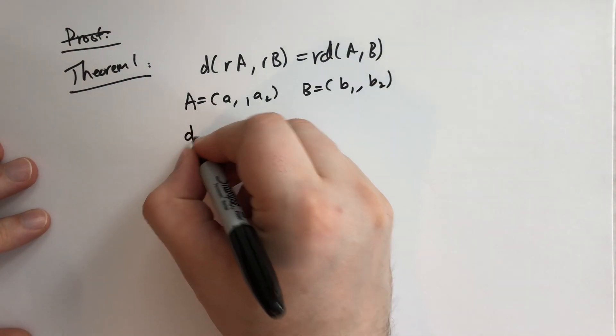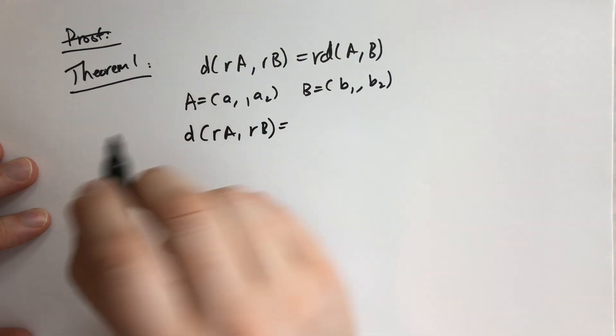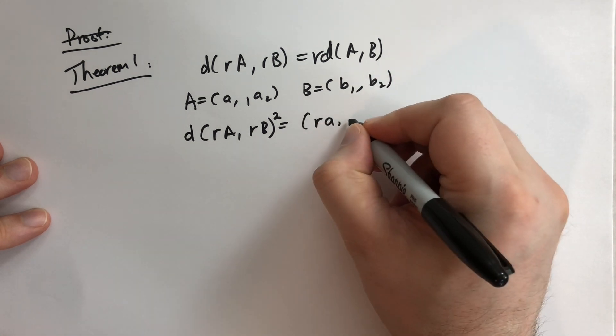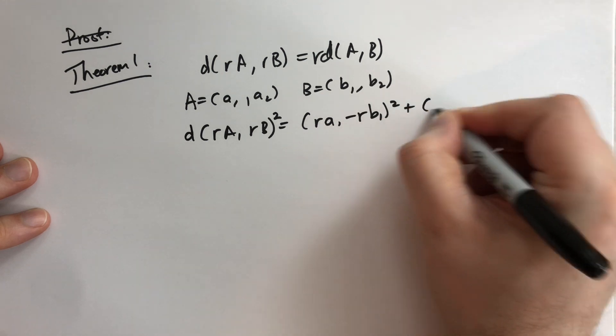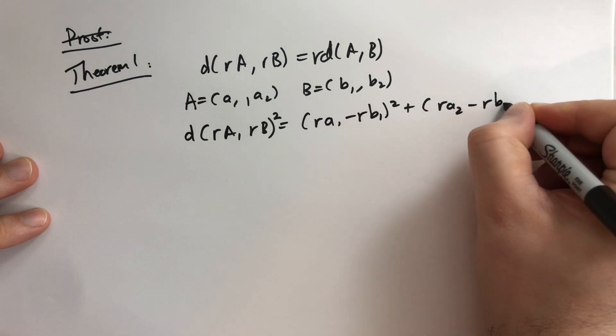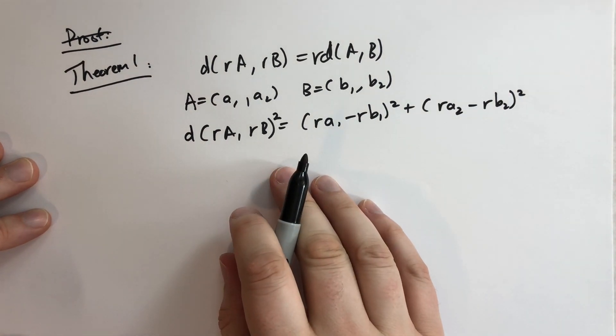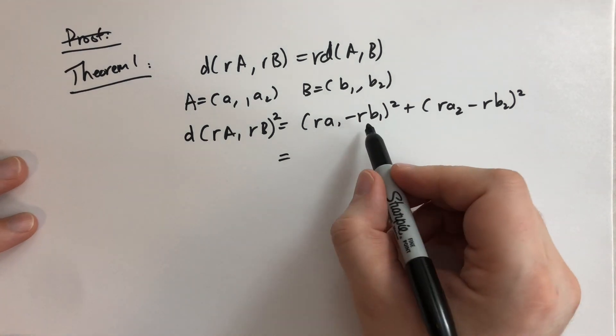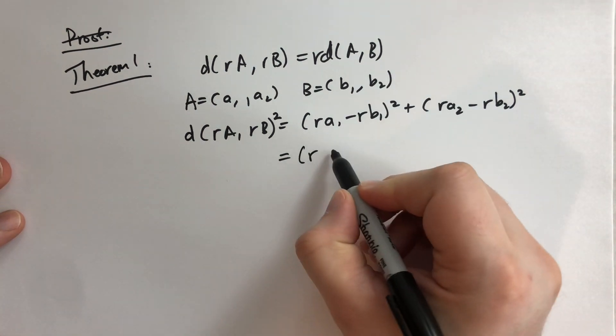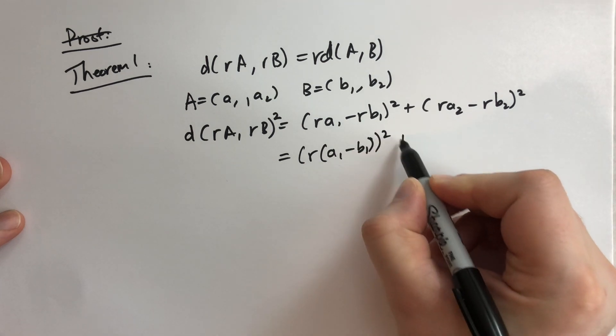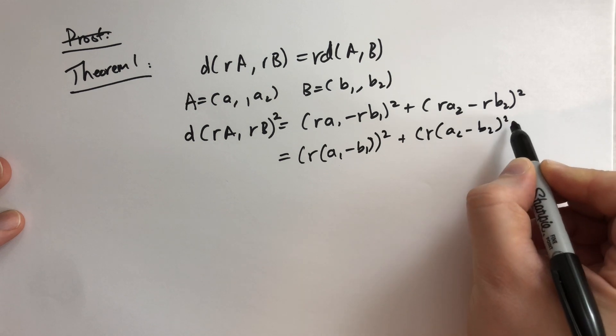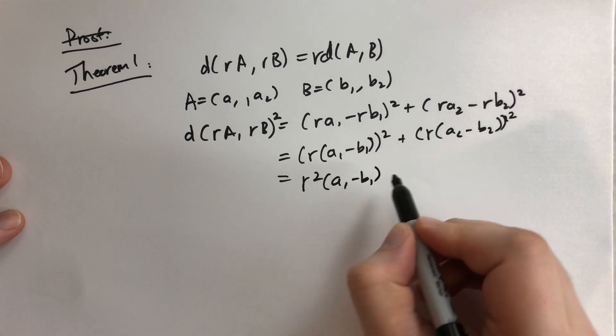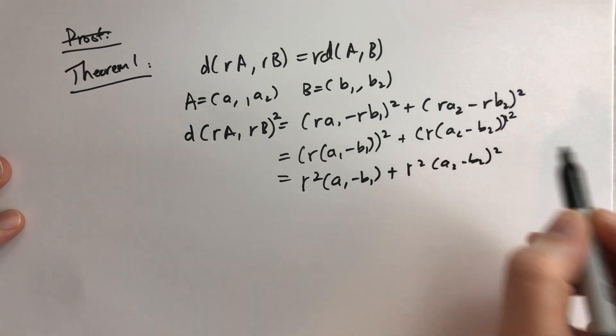And so the distance from RA to RB is equal, well if we take the square of the distance then that's going to be RA1 minus RB1 squared plus RA2 minus RB2 squared. We're applying our distance formula here. Then we can take these R's out. This is going to be R times A1 minus B1. So R times A1 minus B1 squared plus R times A2 minus B2 squared. Forgot the square sign there.